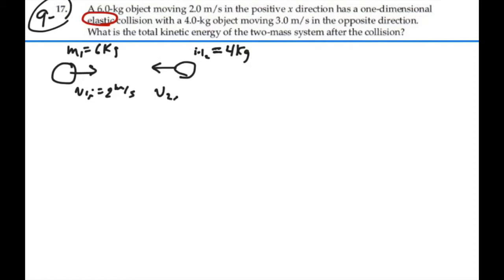Let's imagine what's going on here first. We've got mass one, which is six kilograms, moving at two meters per second — that's V1 initial — about to collide with mass two, which is four kilograms, moving at three meters per second in the opposite direction. So our V2 initial is negative three meters per second, meaning it's moving in the negative x-direction.